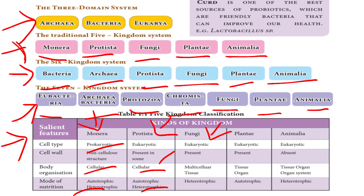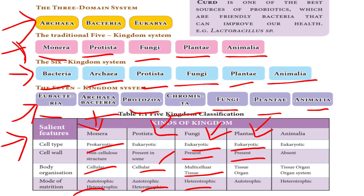Fungi: eukaryote, cell wall present, multicellular tissue organization, and heterotrophic — fungi depend on other organisms because they lack chloroplasts. Plants: eukaryote, cell wall present, tissue-organ organization, autotrophic. Animalia: eukaryote, cell wall absent, tissue-organ and organ system organization, heterotrophic.